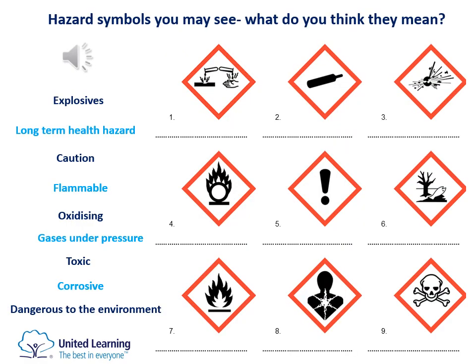When you come to do some experiments, on the bottle of chemicals you will see one or two of these hazard symbols. You need to be aware of what they actually mean. There are nine on here and you can see down the side there are nine labels. What I want you to do is see if you can match the label to the right picture. All the answers will be at the end of the PowerPoint, but try to have a go at them on your own first.